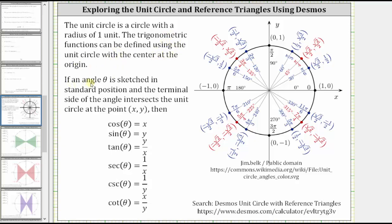If the angle theta is sketched in standard position and the terminal side of the angle intersects the unit circle at the point (x, y), then cosine theta is equal to x and sine theta is equal to y. And therefore, it follows that tangent theta is equal to y divided by x.